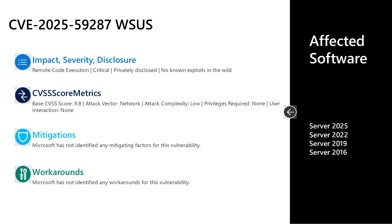Next up is CVE-2025-59287. This is a critical remote code execution vulnerability in WSUS, or Windows Server Update Services. This one was privately disclosed with no known exploits in the wild. It has a base CVSS score of 9.8. The attack vector is over the network, attack complexity is low, privileges required is none, and user interaction is also none. There are no documented mitigations or workarounds. Affected software is all versions of Server OS in mainstream support — from Server 2016 all the way through Server 2025.